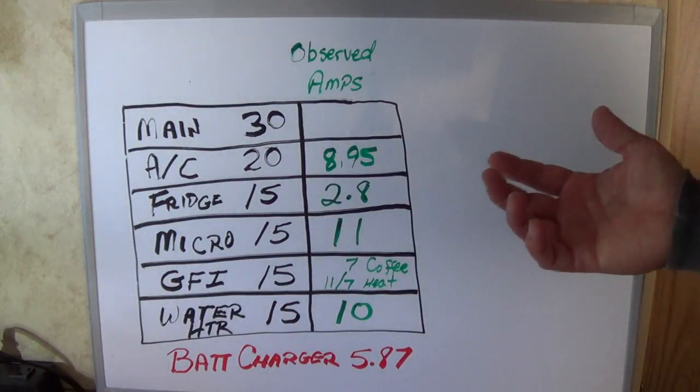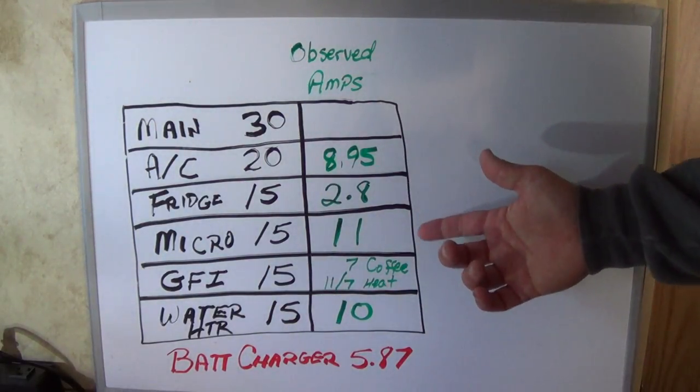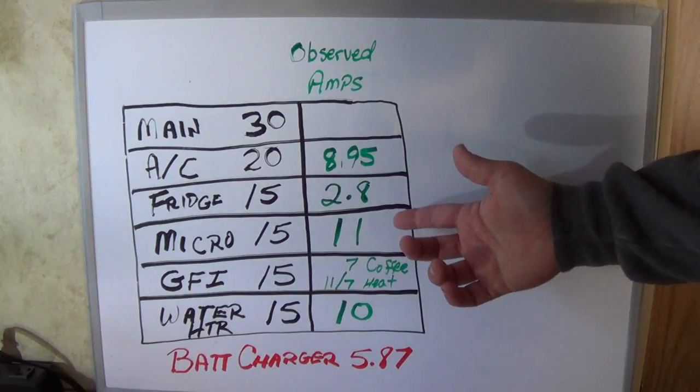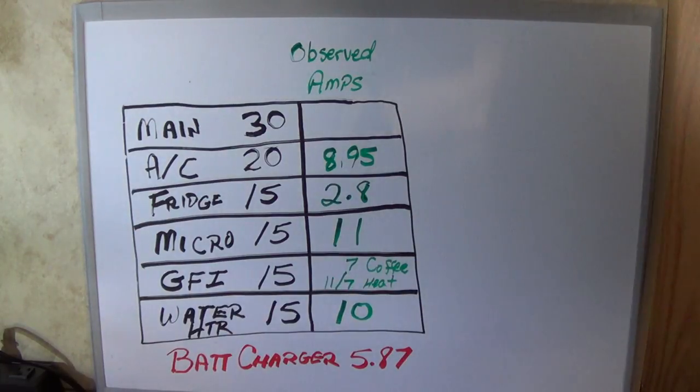My coffee maker pulls 7 amps, so I can't run the coffee maker and the microwave and the fridge all at the same time. You kind of have to space out what you want to use.